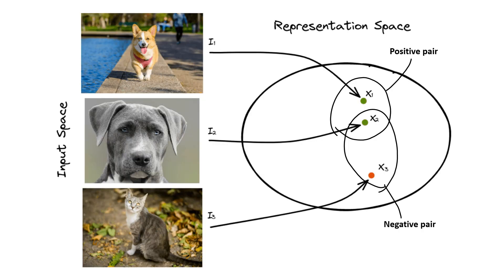Here's how contrastive learning works. Imagine you have a bunch of unlabeled images and you want your model to learn to recognize different objects in them. With contrastive learning, you essentially create positive pairs of similar images — let's say a pair of dog pictures — and a negative pair of dissimilar images, like a dog and a cat. Then the model is trained to map similar images close together in a learned representation space while pushing dissimilar images farther apart.